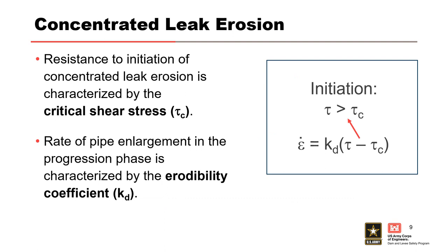For concentrated leak erosion, the resistance to initiation is characterized by the critical shear stress. When the applied hydraulic shear stress exceeds the critical value, concentrated leak erosion will initiate. The rate of pipe enlargement in the progression phase is characterized by the erodibility coefficient, K sub D.